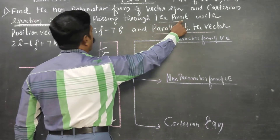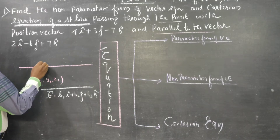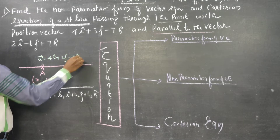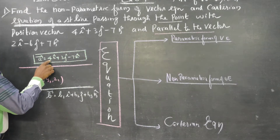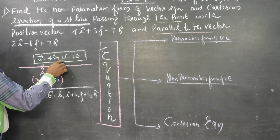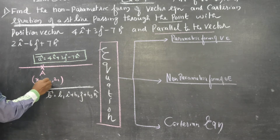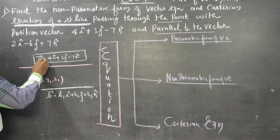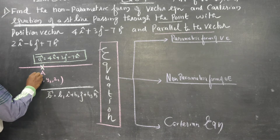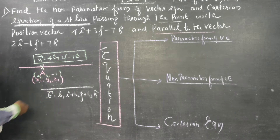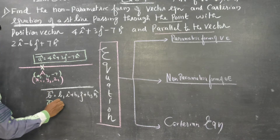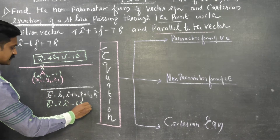The equation passes through the point. This is my a vector: 4i plus 3j minus 7k. This is my a vector, also called x1, y1, z1 — where x1 is 4, y1 is 3, z1 is minus 7. The position vector of the point is 4i plus 3j minus 7k, so the point is (4, 3, −7). The parallel vector v is equal to 2i minus 6j plus 7k.